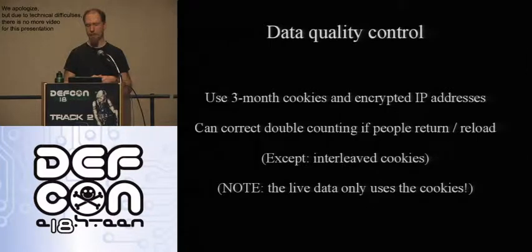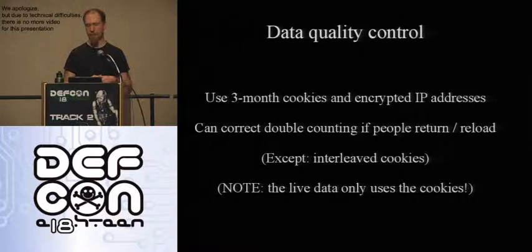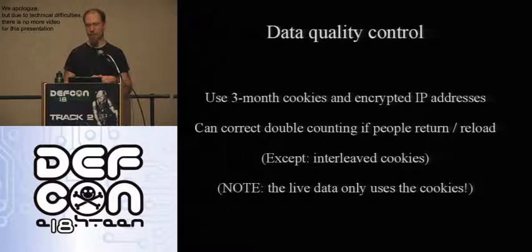In terms of data handling, we set a three-month persistent cookie and stored an encrypted IP address with a key we then threw away. We used those primarily to avoid counting the same person twice. If you came back, we wanted to know whether you were the same person with the same fingerprint or a different person with the same fingerprint — those are very different things. If we saw an interleaved cookie pattern like A, B, A at the same IP address, we inferred there were multiple computers behind a NAT firewall with the same fingerprint, such as a corporate network where a sysadmin clones the same software, giving those users some protection.